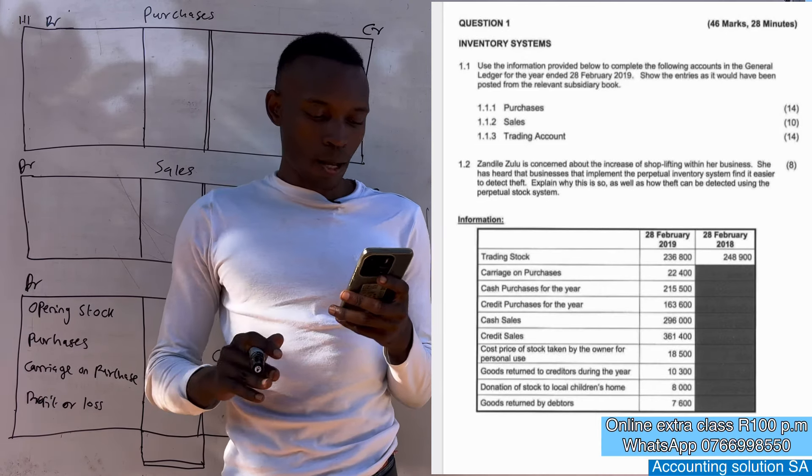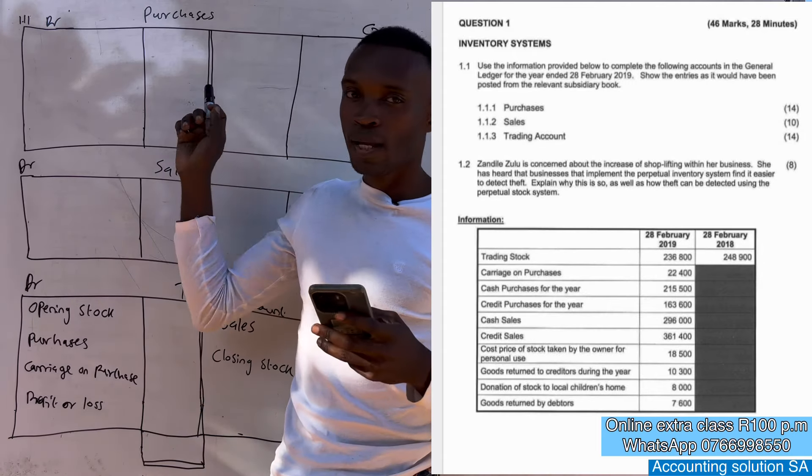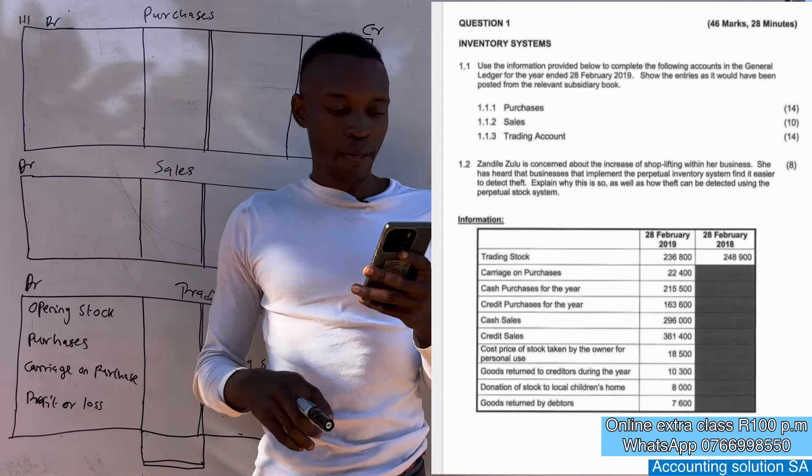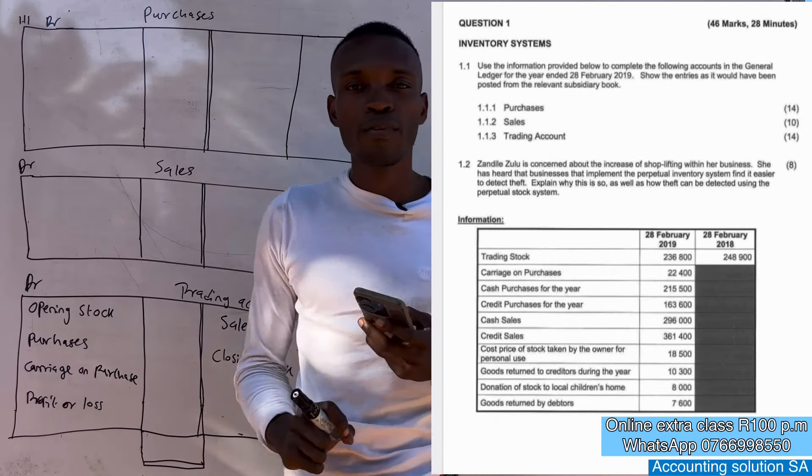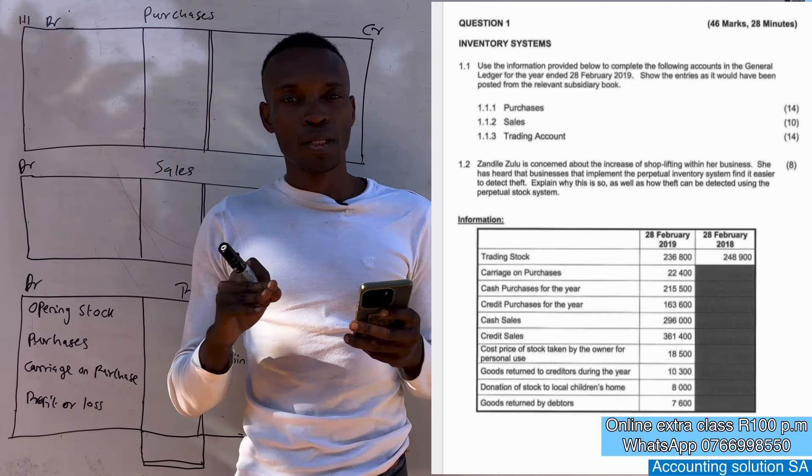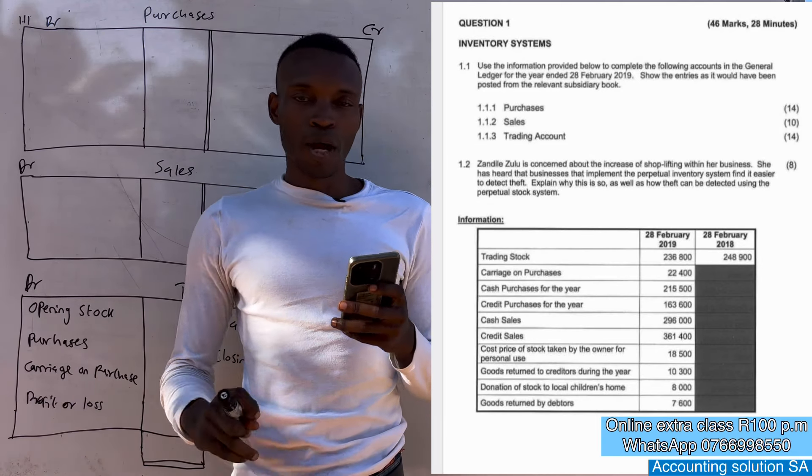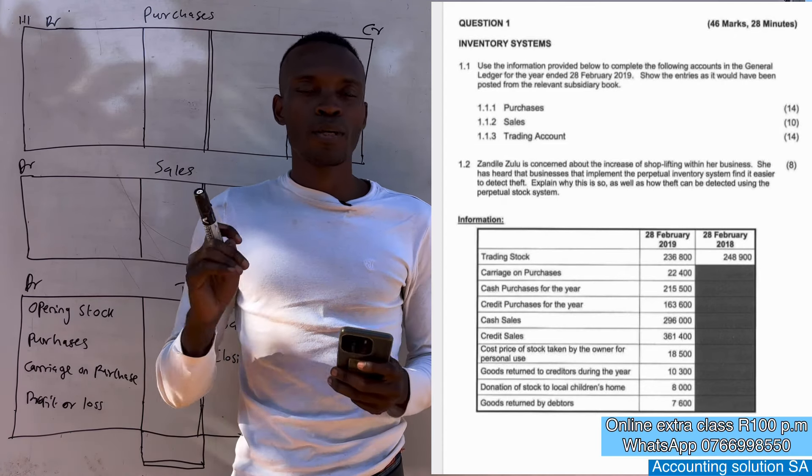Now on this question paper we are going to prepare a purchase account, we are going to prepare a sales account as well as trading account. Inventory is the most simplest topic which we have to get total. Under part one and two I already explained what is the meaning of perpetual, what is the meaning of periodic, you can go and check them after this video.